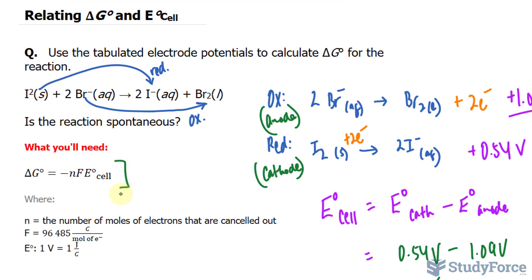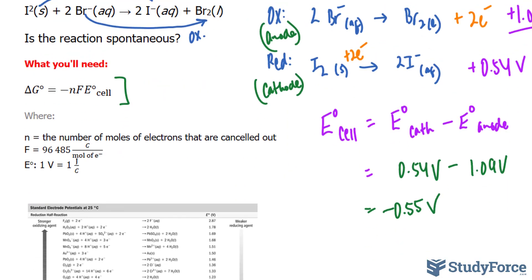As we've learned in the past, if delta G is positive, the reaction is not spontaneous, and the opposite is true if it's negative. So let's substitute what we know into this formula.